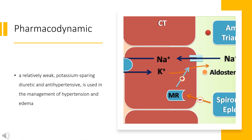Triamterine, a relatively weak potassium-sparing diuretic and antihypertensive, is used in the management of hypertension and edema. It primarily works on the distal nephron in the kidneys, acting from the late distal tubule to the collecting duct to inhibit Na+ reabsorption and decrease Na+ excretion.